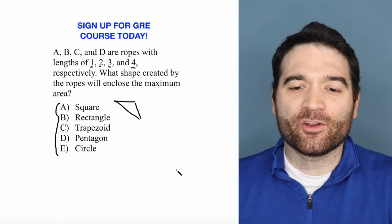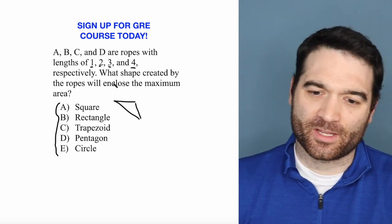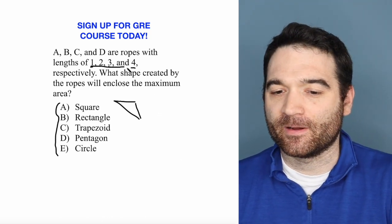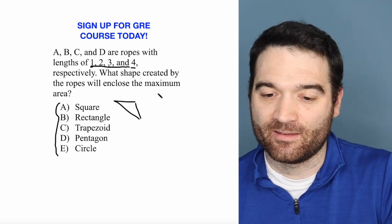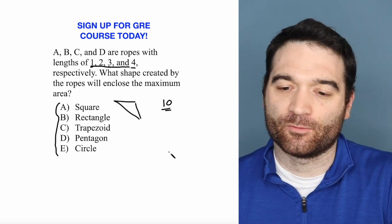But the question is, which area will enclose the most? Well, consider this. What is the total length that we have here? 1 plus 2 plus 3 plus 4 is 10. So we have 10 units of rope to play with.